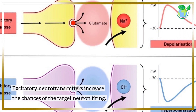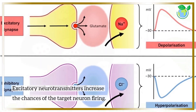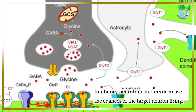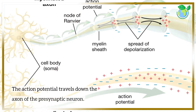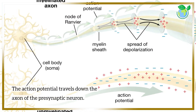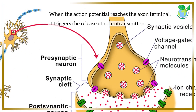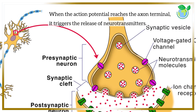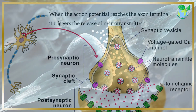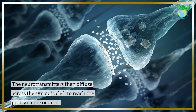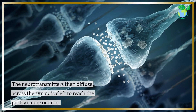Excitatory neurotransmitters increase the chances of the target neuron firing, while inhibitory neurotransmitters decrease those chances. The action potential travels down the axon of the presynaptic neuron, and when it reaches the axon terminal, it triggers the release of neurotransmitters. These neurotransmitters then diffuse across the synaptic cleft to reach the postsynaptic neuron.